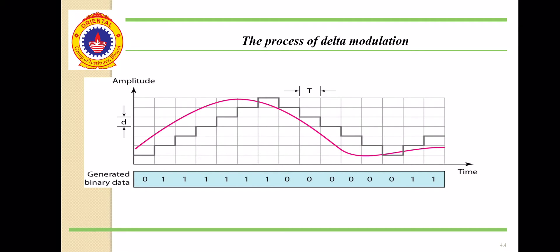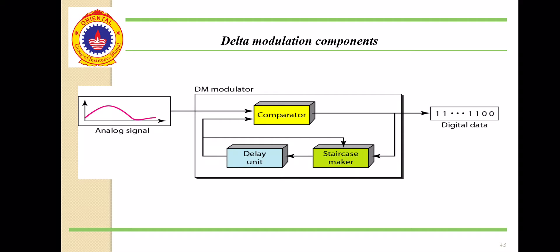This is the process of Delta Modulation. We are using a staircase signal. Step size is fixed, that is Delta. The pulse width is T. We are generating a staircase signal. If the staircase signal is increasing, we are using 1. And if the staircase is decreasing, we are using only 0. We are using 1 bit per sample. Here, in Delta Modulation, step size is fixed. The staircase signal follows the amplitude of the message signal.